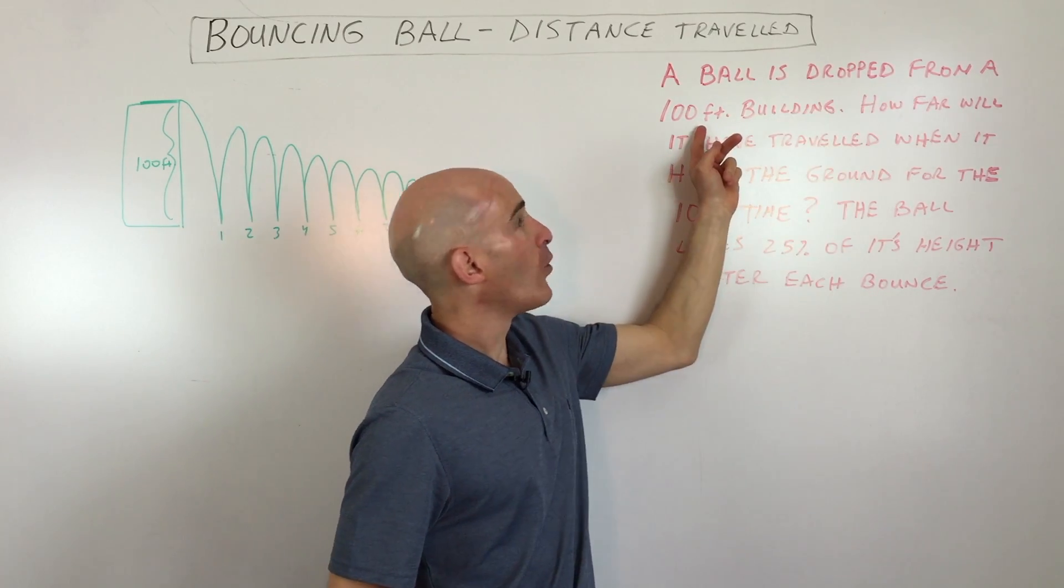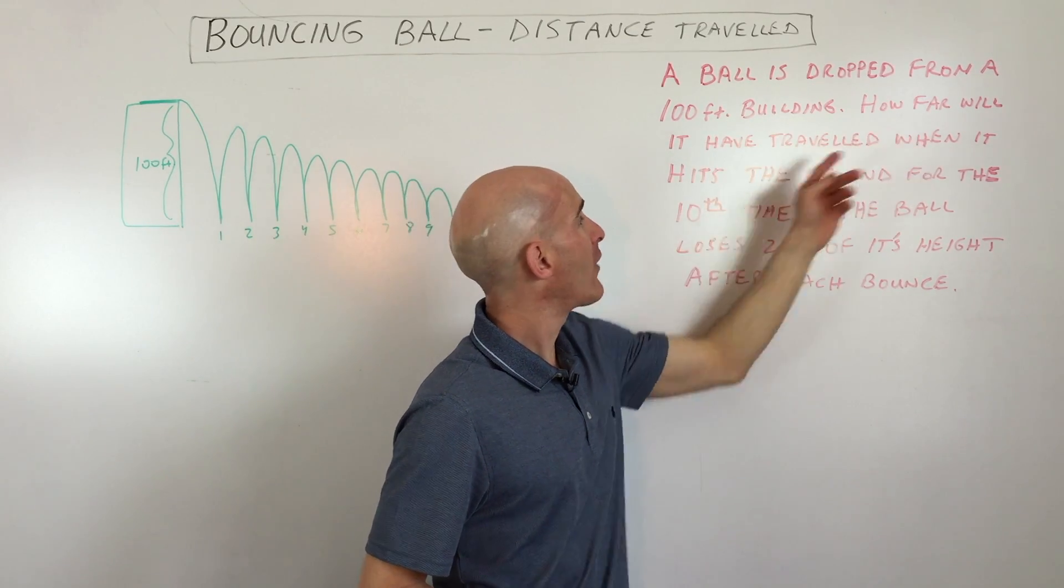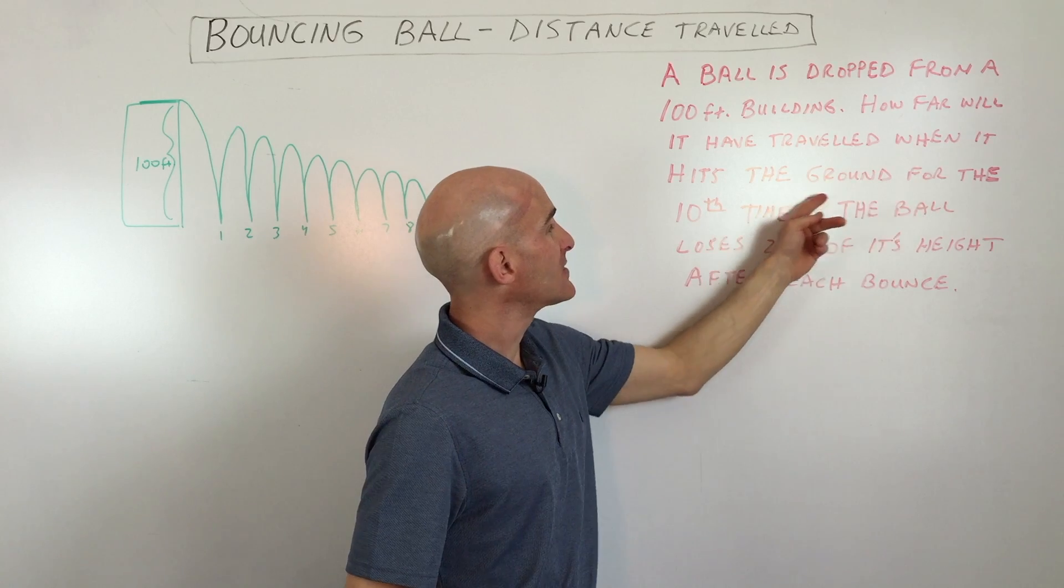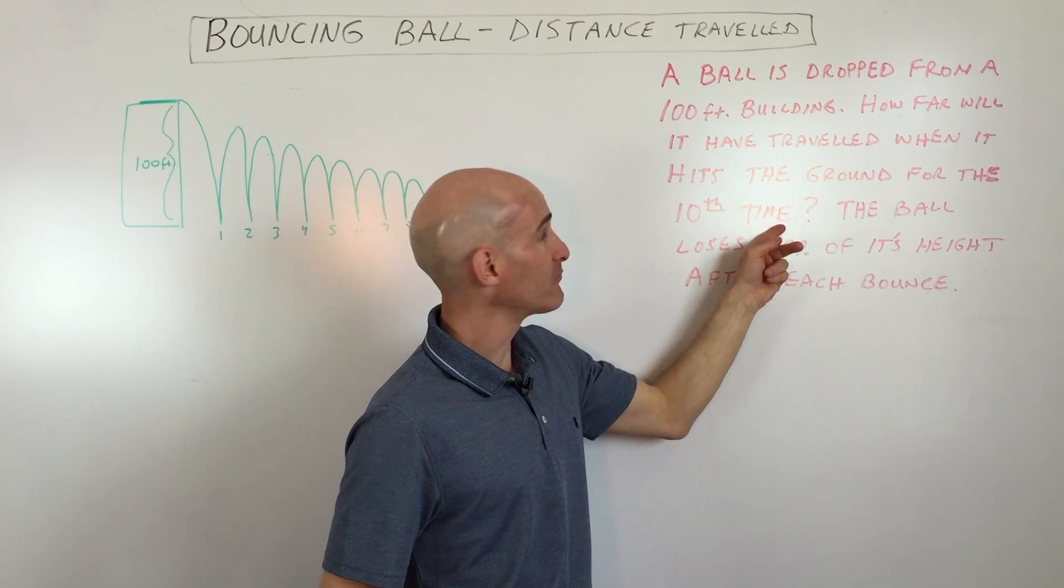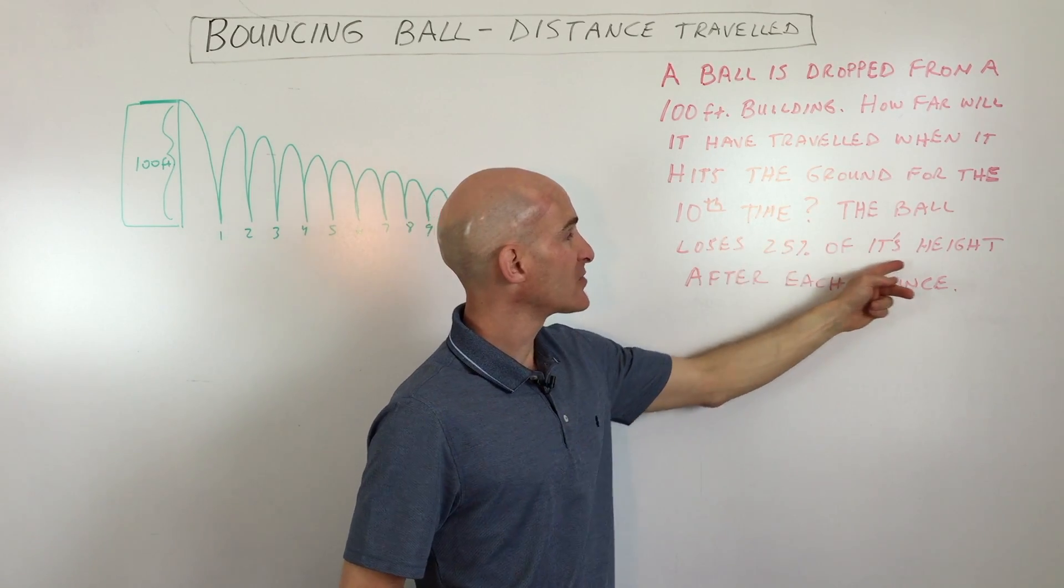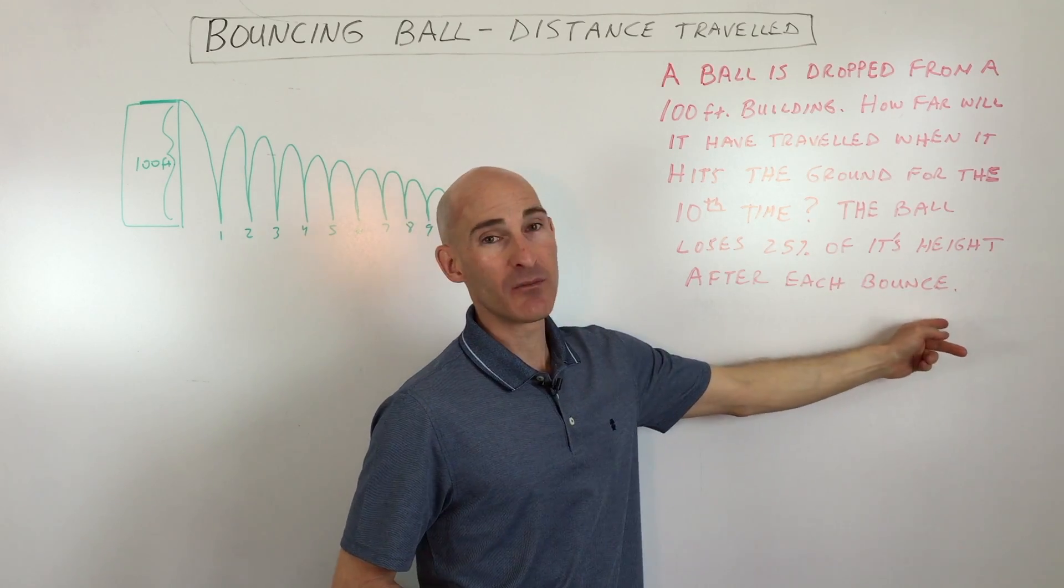A ball is dropped from a 100 foot building. How far will it have traveled when it hits the ground for the 10th time? The ball loses 25% of its height after each bounce.